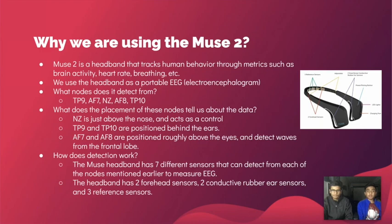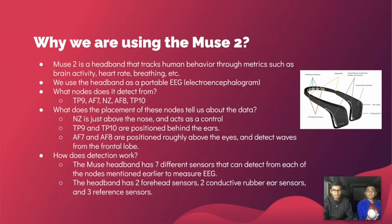For this specific proof of concept, we are using the Muse 2 headband as a portable EEG, or electroencephalogram. The nodes it can detect from are the TP9 and TP10 nodes, positioned behind the ears; the AF7 and AF8 nodes, positioned right above the eyes; and the NZ node, positioned right above the nose. The Muse 2 detects EEG waves from these nodes using seven different sensors, which include forehead sensors, conductive rubber ear sensors, and reference sensors.